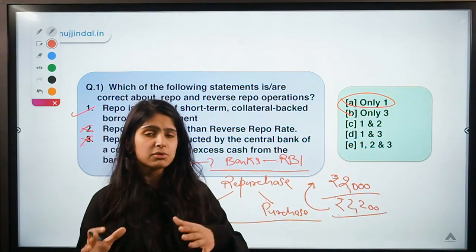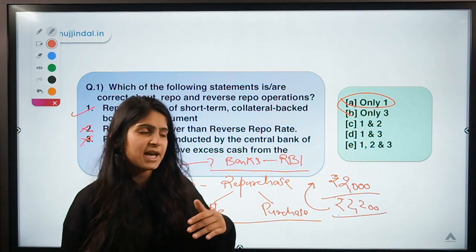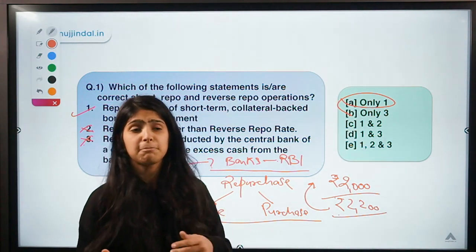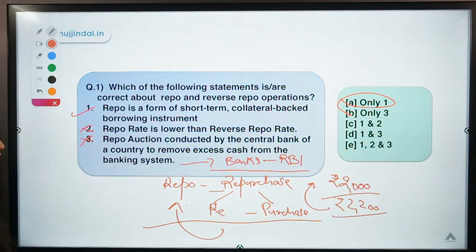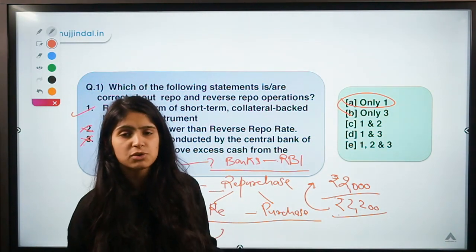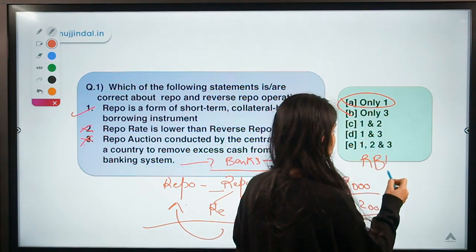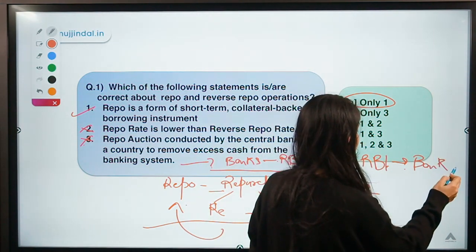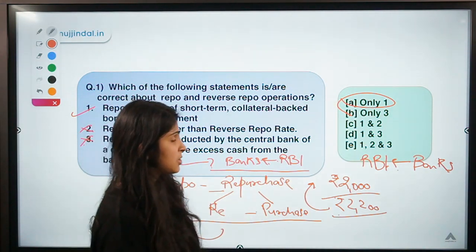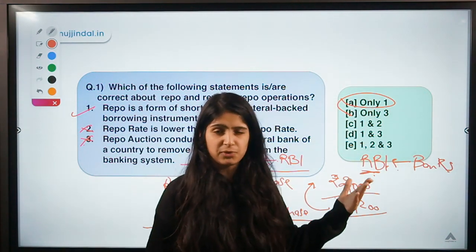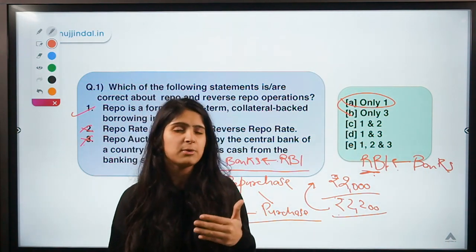Banks first sell their securities to RBI to take a loan, and when they return the money they take back the securities — they are purchasing the securities again, hence the term 'repurchase'. Reverse repo is the opposite: your father needs money and comes to you. So in a reverse repo operation, RBI goes to banks and takes money from them.